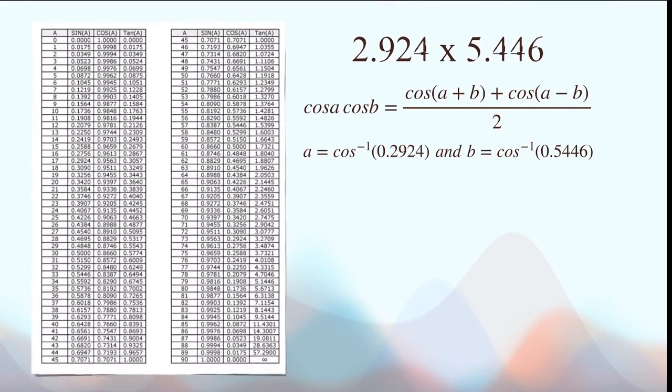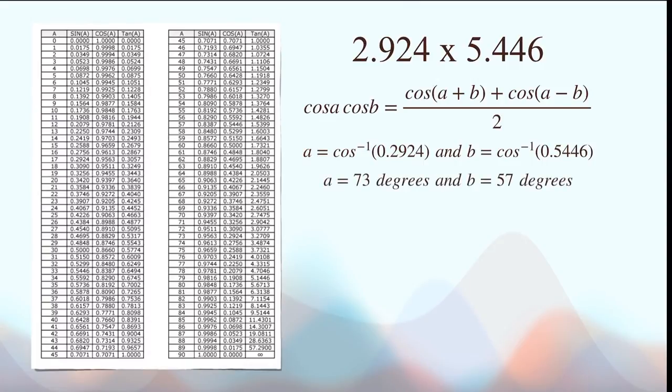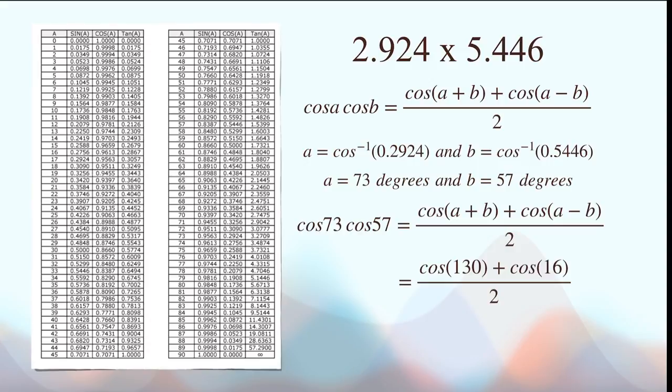So we now know what A and B are. And we can apply the product to sum identity. So substituting A and B in. And simplifying cos 130 to be negative cos 50, because that is the range of the angles for this trigonometric table.